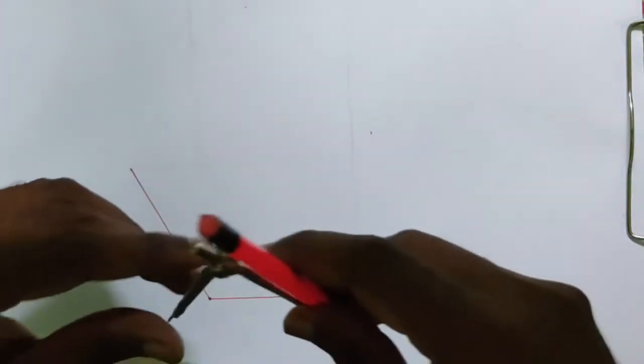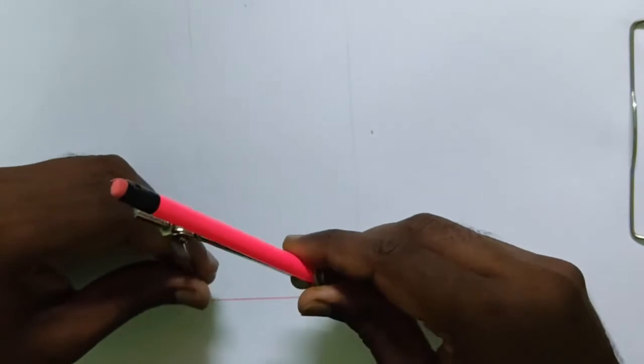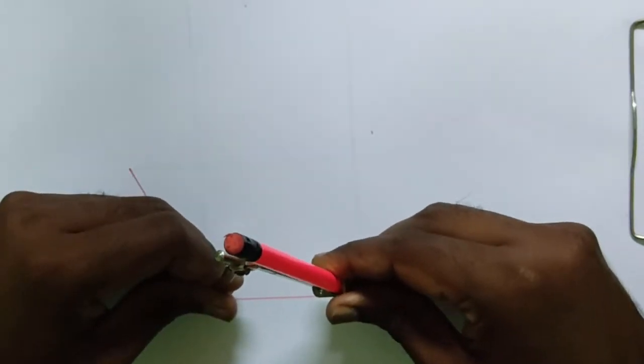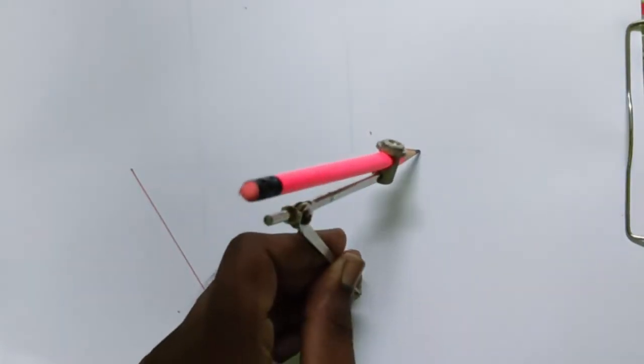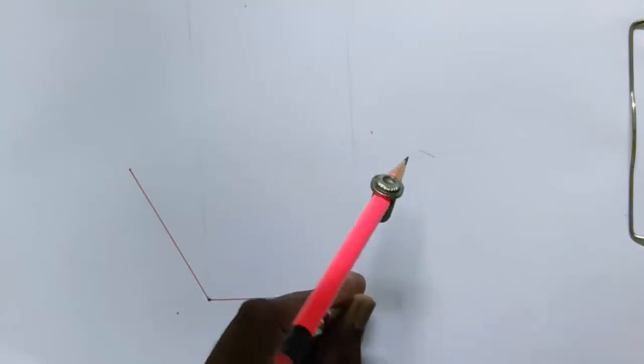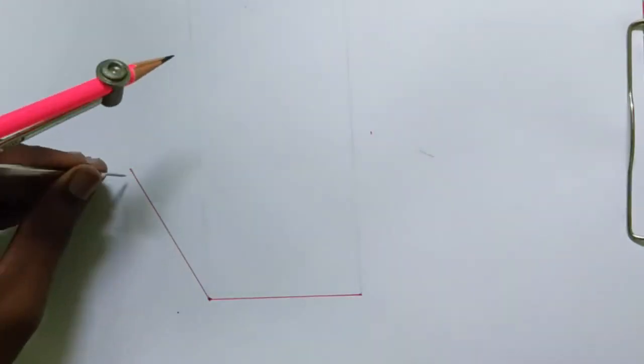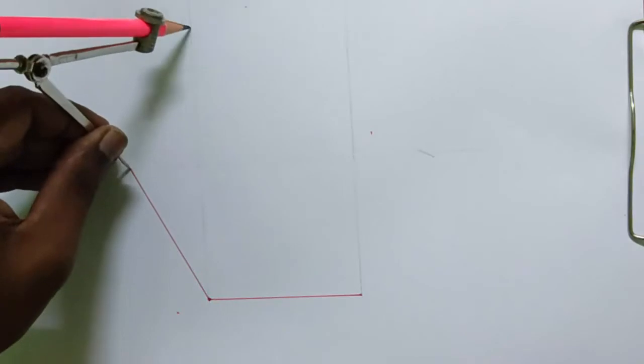So now take your compass and take that 70 mm in that compass, and cut an arc here. Then from this point, cut an arc here.